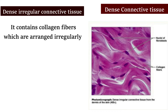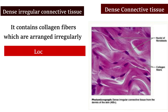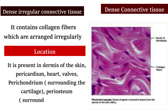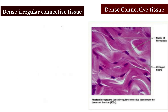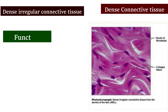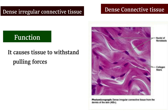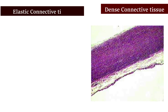Dense irregular connective tissue contains collagen fibers arranged irregularly. It is present in the dermis of the skin, pericardium, heart valves, perichondrium surrounding the cartilage, and periosteum surrounding the bone. Its function is to allow tissue to withstand pulling forces exerted in various directions.